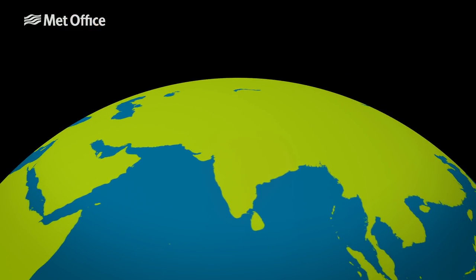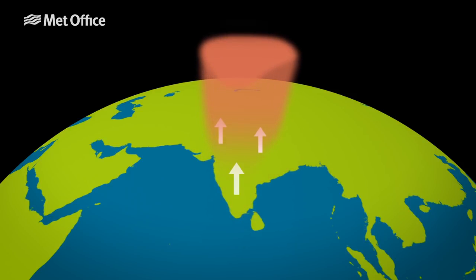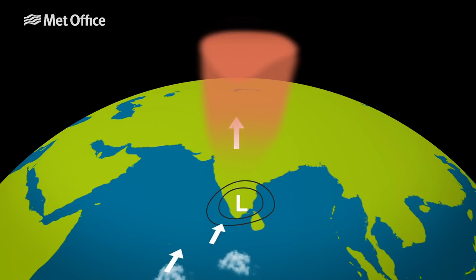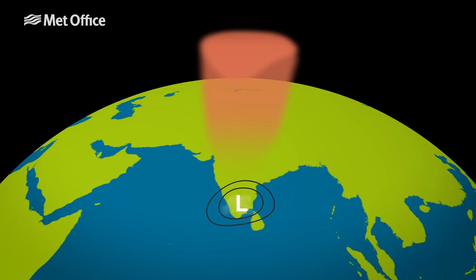Warm air is less dense than cold air, and when the heat rises over the Indian subcontinent, the air also rises. A huge area of low pressure forms, creating a vacuum effect and pulling in much cooler air from the southwest. It's at this point that the dry northeasterly winds from continental Asia are replaced by southwesterly winds loaded with moisture from the surrounding Indian Ocean — this is the southwest monsoon, the abrupt change from a dry season to a wet season.